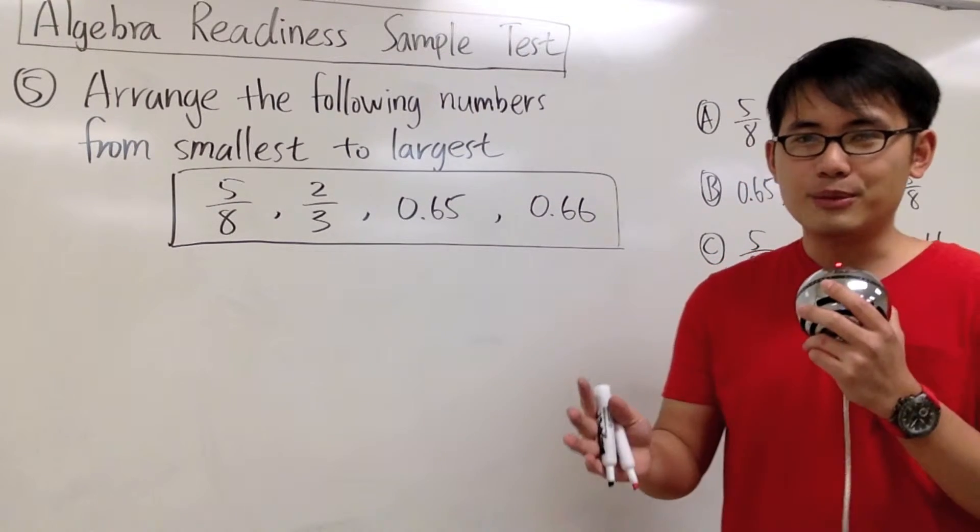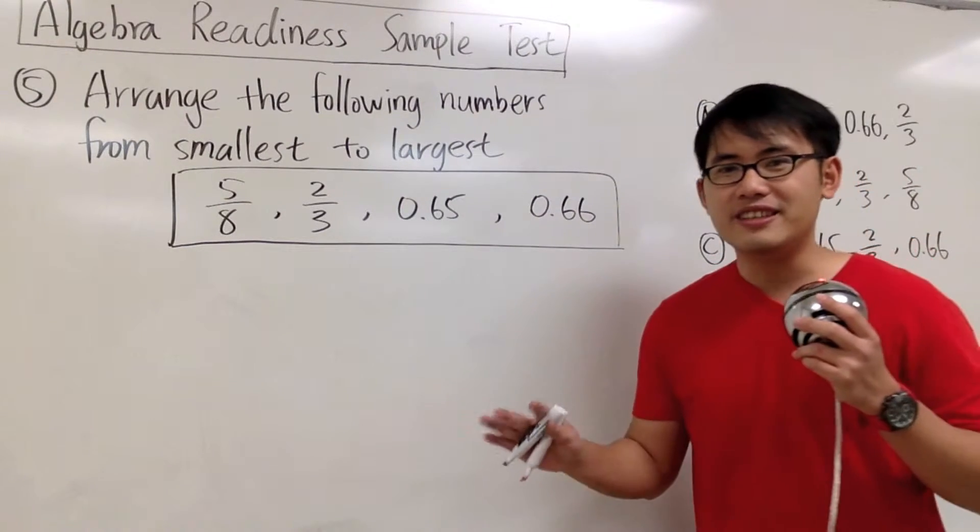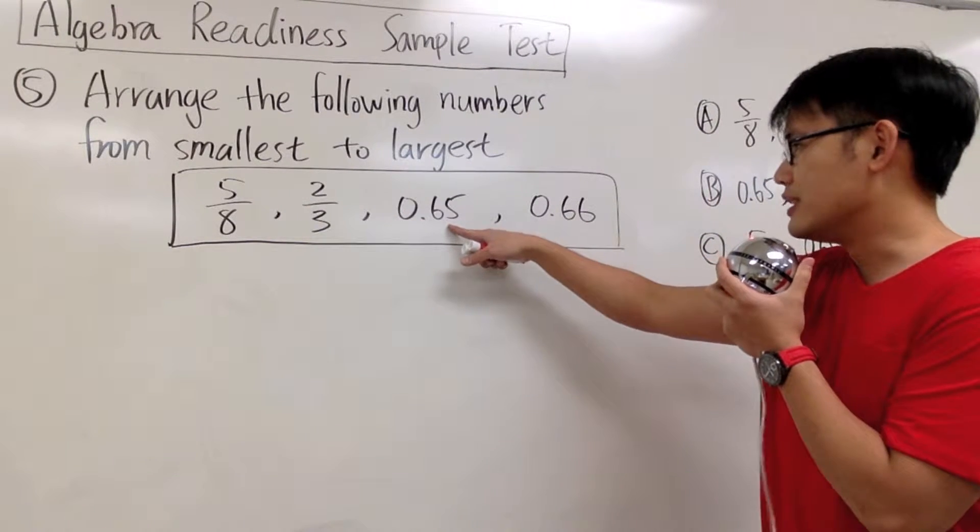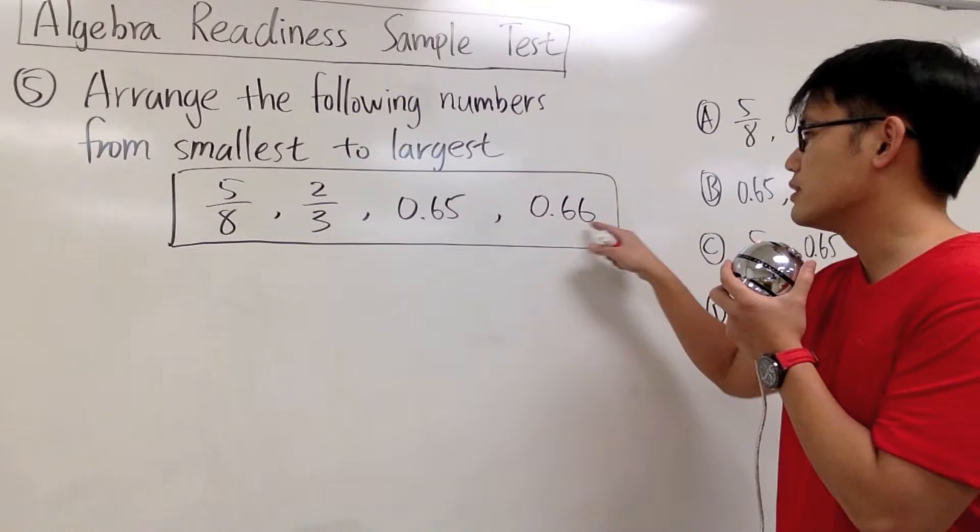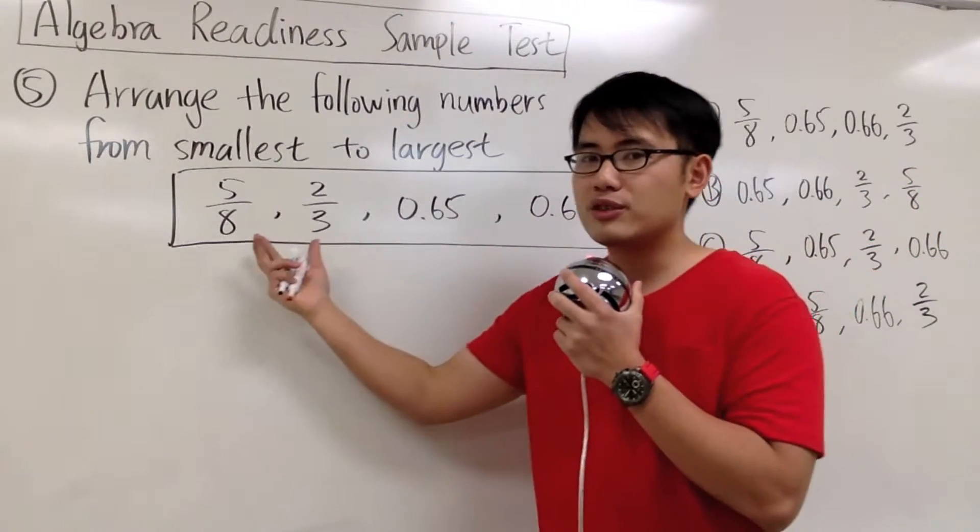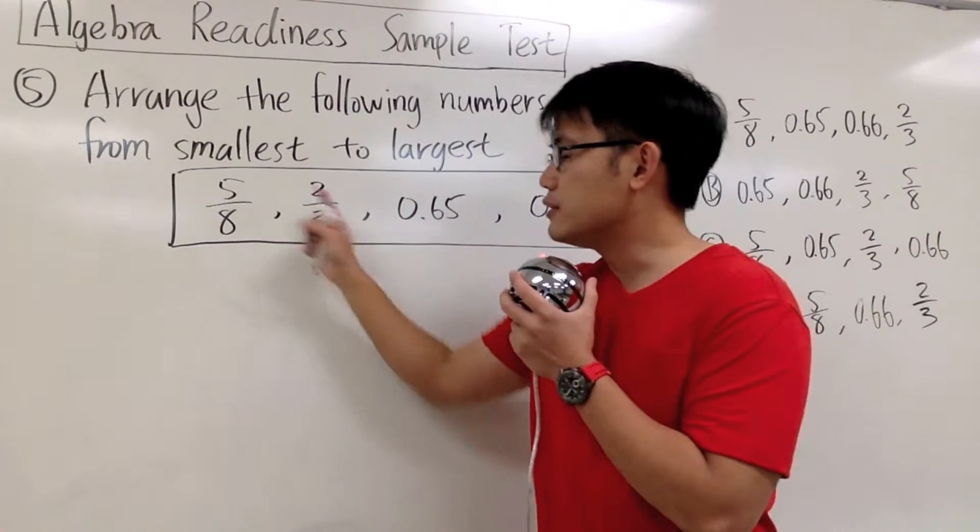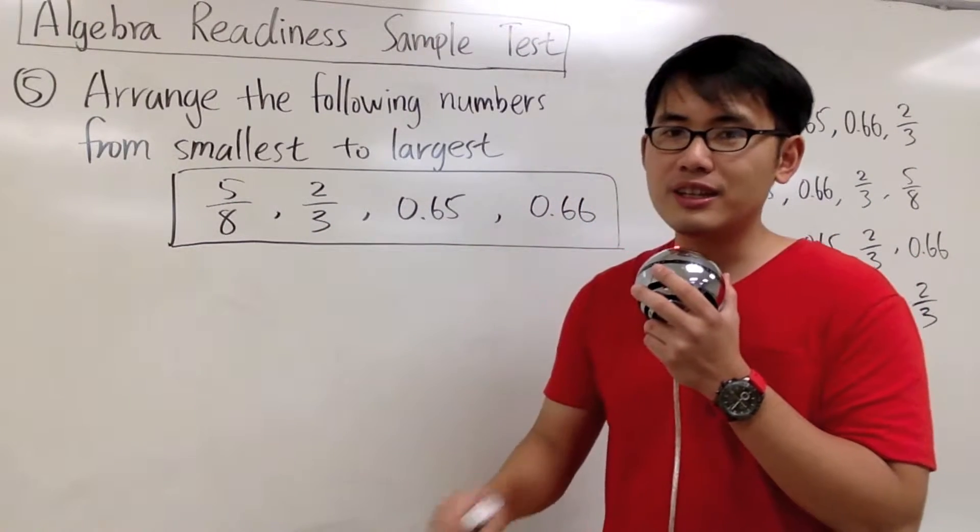Hopefully, you guys all tell me decimals because it's just so much easier. 0.65 is so much easier to see that this is less than 0.66. But to compare fractions, it's not so easy. So our game plan is, we'll change these two fractions into decimals and then compare.